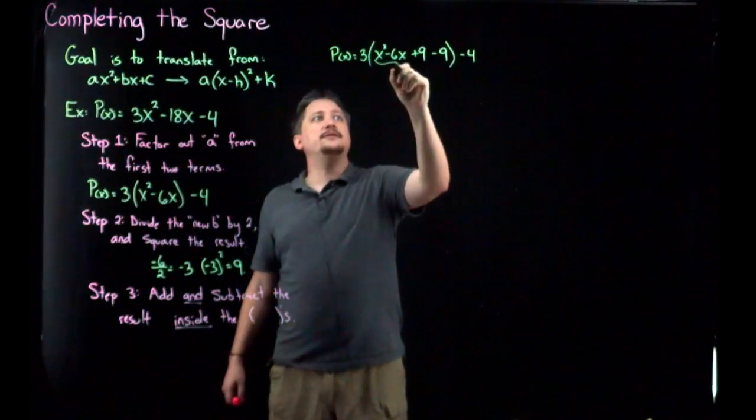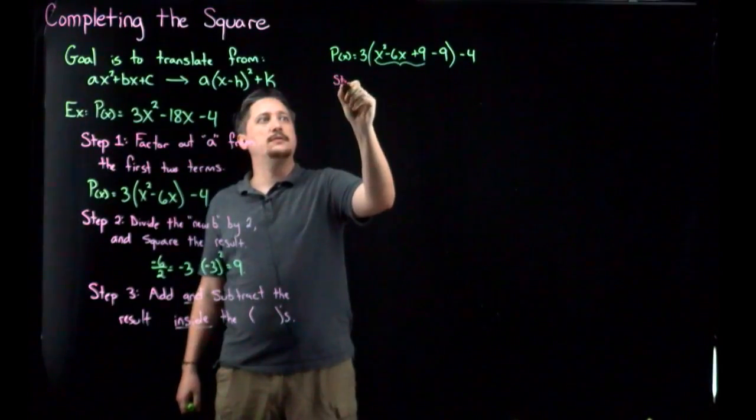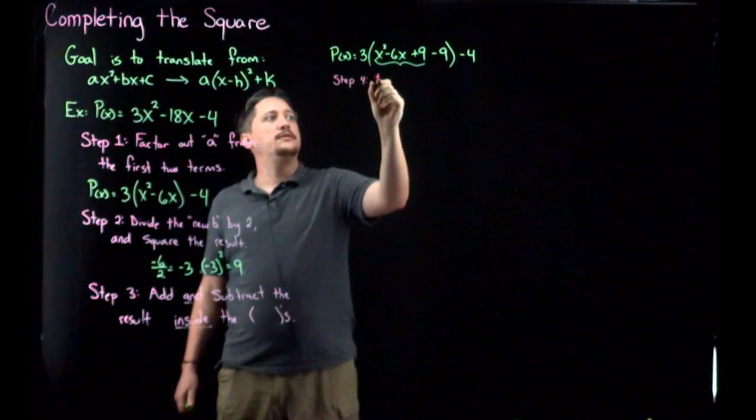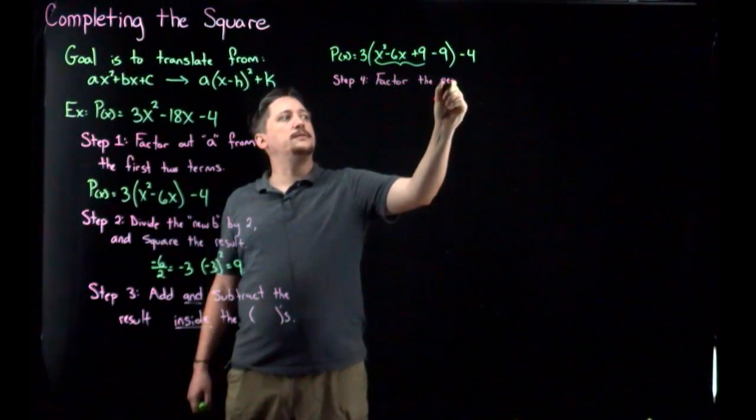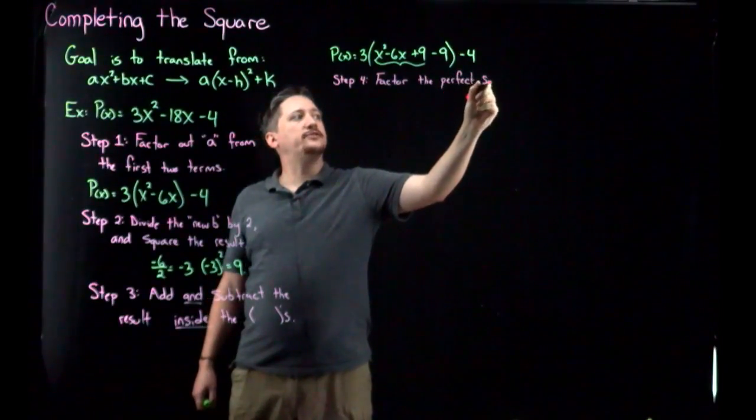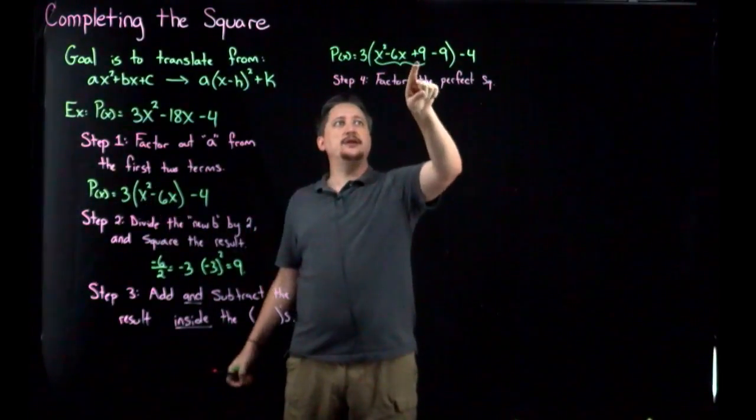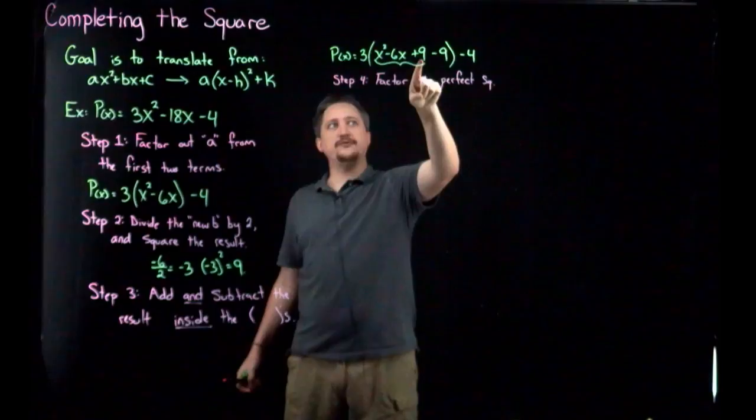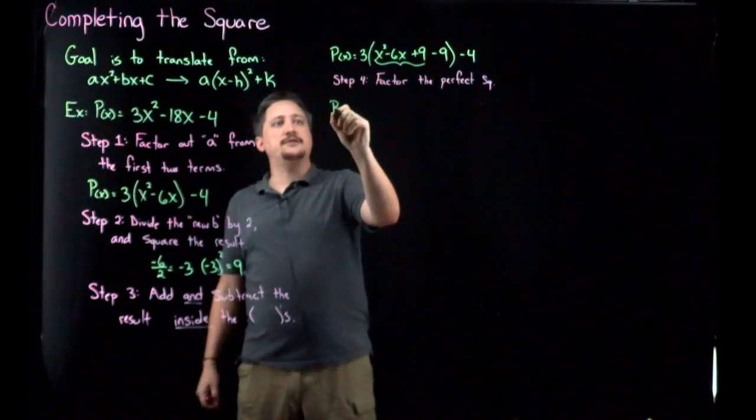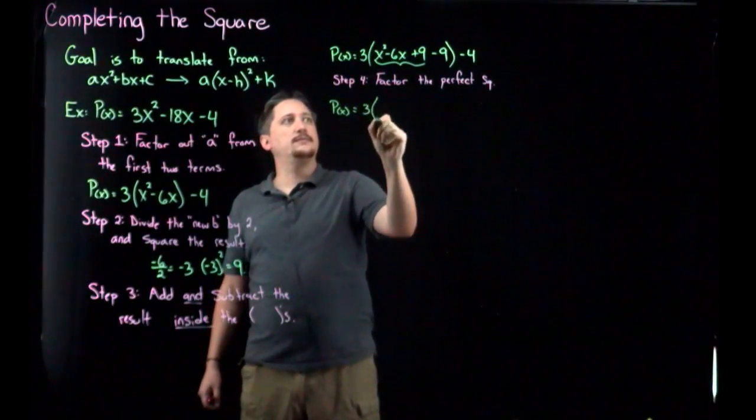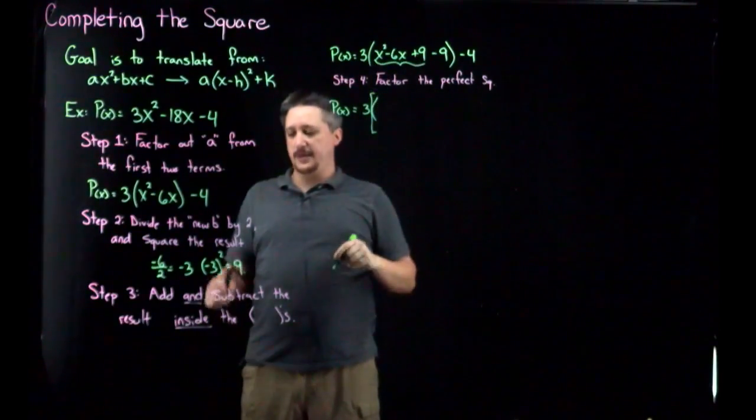Now, by design, step four: Factor the perfect square. And that perfect square is always the thing you started with, the x squared minus six x in that case, and the plus piece, which is why I said I'll write the plus first, because that makes the first three a perfect square. So in particular then, p of x equals three. So this x squared minus six x plus nine, moreover, it's going to be x plus this thing that we found before we squared it.